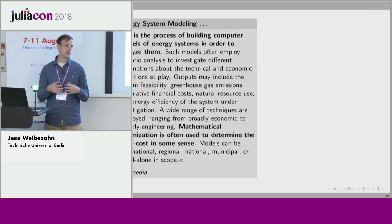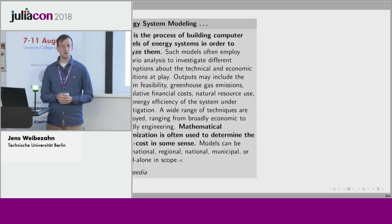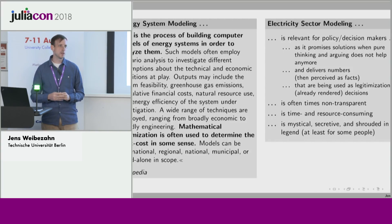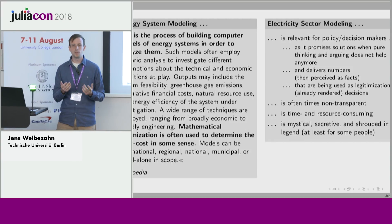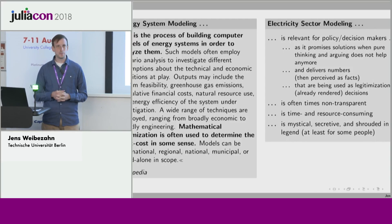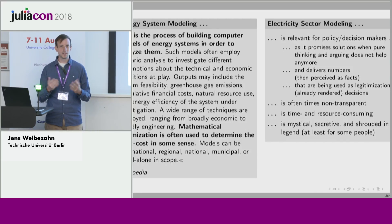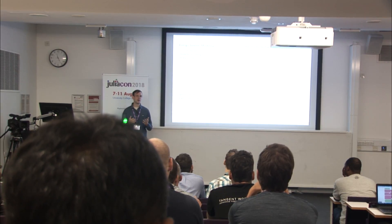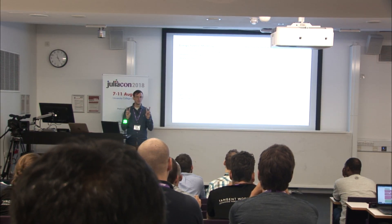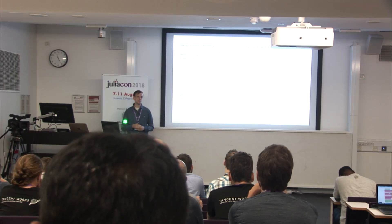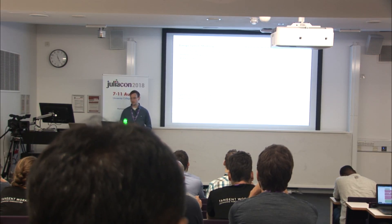Energy system modeling can happen on any scope from global to local scale, and we're focusing on the electricity part. Why are we doing this? Because it's relevant. Policymakers and decision makers actually rely on the outcomes of our models because they promise solutions when just thinking about the system is not enough anymore. The models deliver numbers, and those numbers easily become facts or perceived facts, used to legitimize decisions that are sometimes already taken.